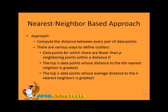Outlier definitions include: data points for which there are fewer than P neighboring points within distance D; the top-N data points whose distance to the K-th nearest neighbor is greatest; and the top-N data points whose average distance to the K nearest neighbors is greatest.